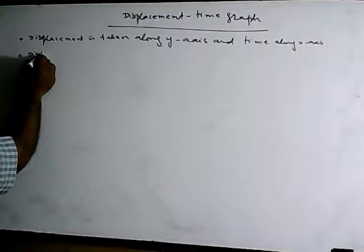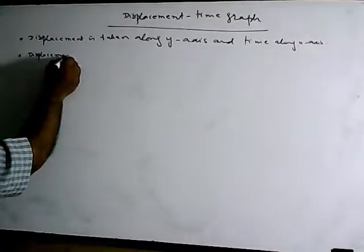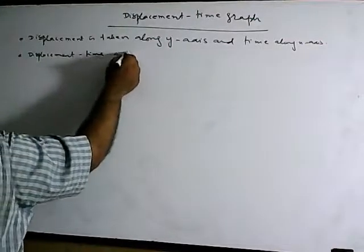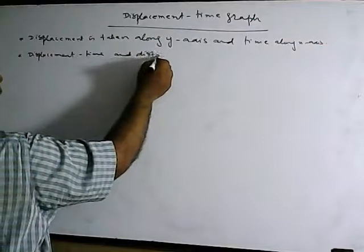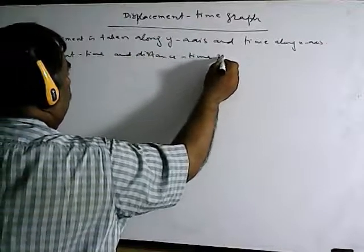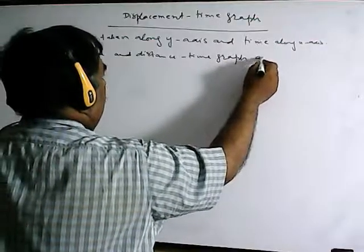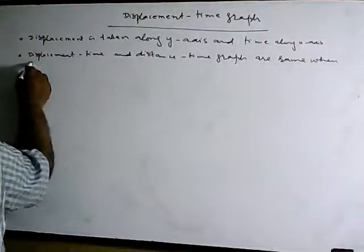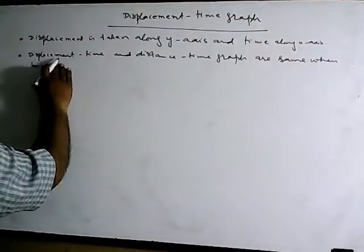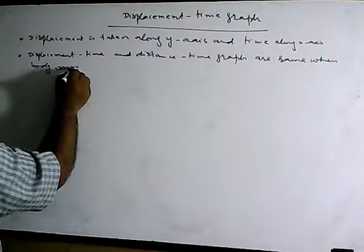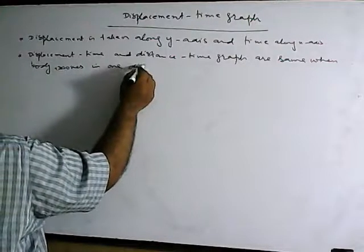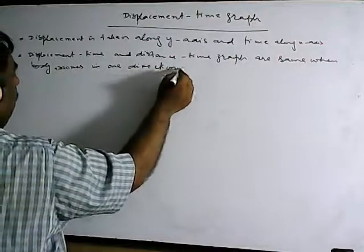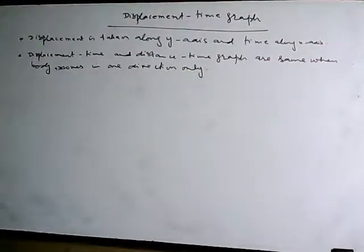The displacement-time graph and the distance-time graph become the same when the body moves in one direction only. If the body is moving only in one direction, then the displacement-time graph and distance-time graph are always the same.